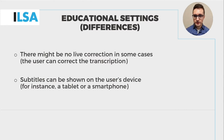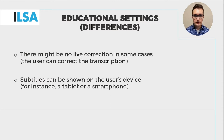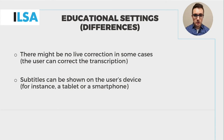In educational settings, standards can be different altogether — they can be much lower, as can the technical requirements to provide the service. This is partly because of a much smaller audience, for instance just one hard-of-hearing student at a lecture, and also because of different needs. There might be no live correction in some cases. The user — that is the student — can correct the transcription, or a fellow hearing student can do that. It might be enough to have a laptop with speech recognition software. Subtitles can be shown on that laptop or on the user's devices such as a tablet or a smartphone.